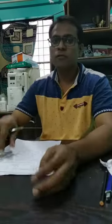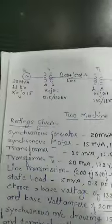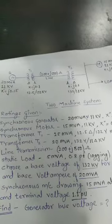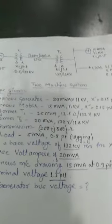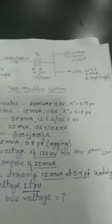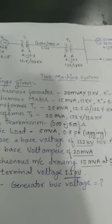Now we will solve the numerical. The system consists of a generator, then transformer T1, then the transmission line whose impedance is given, then transformer T2, and a 15 MVA synchronous motor. A static load is also given.